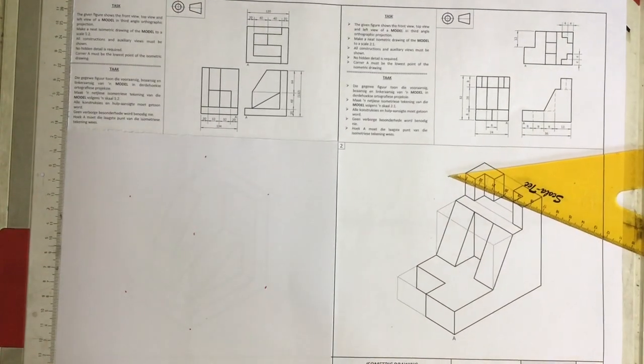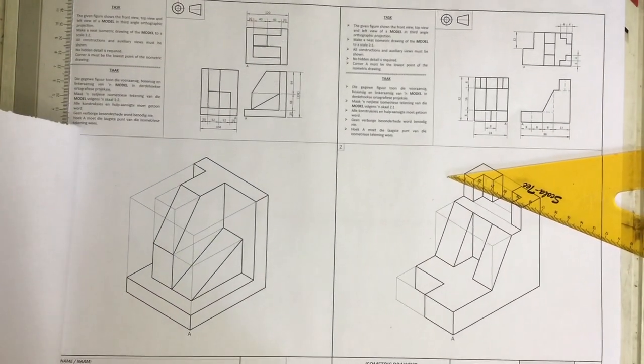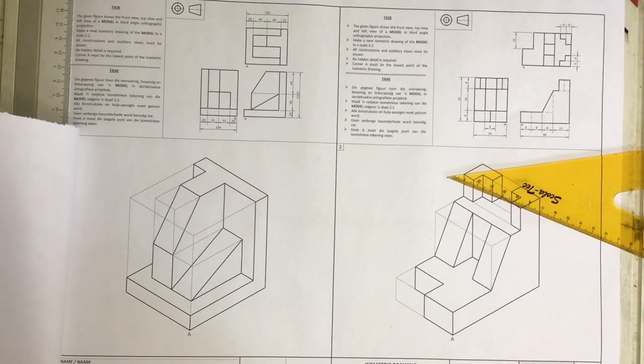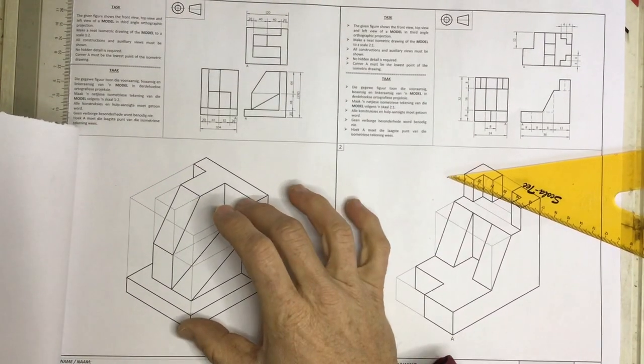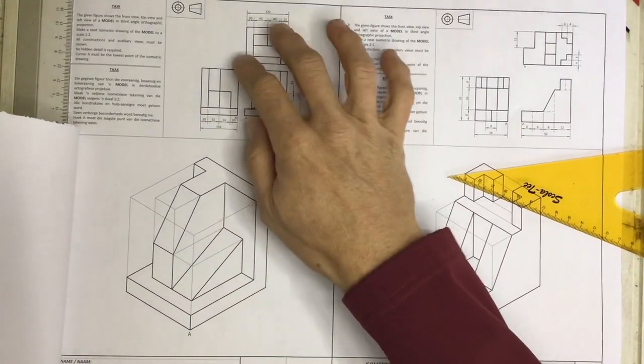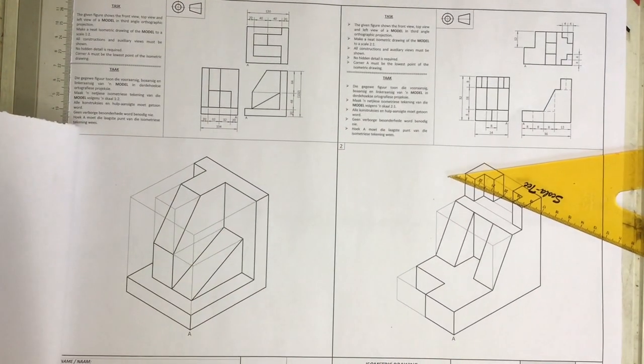We're going to be looking at 7.5 of the HSE grade 10 textbook. They're asking you to do an isometric view of these three views that have been given as a third angle orthographic projection.